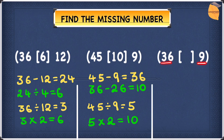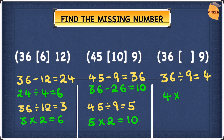Let's apply this rule to the third pair. 36 divided by 9 gives 4, and then 4 times 2 gives 8. So the number that goes in the middle for this question is 8.